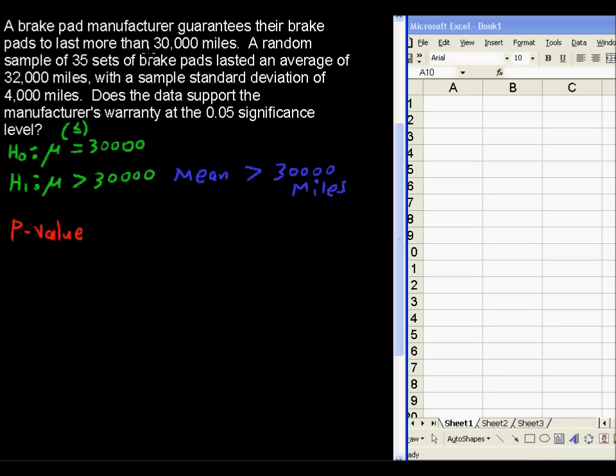We have mu that we're testing is 30,000 miles. We have a sample mean of 32,000 miles, so that's our x-bar is 32,000 miles. Our sample standard deviation is 4,000. It doesn't say anything about knowing the population standard deviation, so this is a sample standard deviation of 4,000 miles. And we have a sample size of 35, so n equals 35.